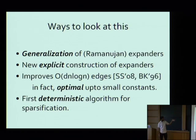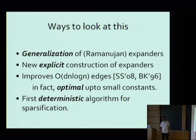Ways to look at what's new: you can see this as a generalization of expander graphs, which are approximations of the complete graph. Because the algorithm is deterministic, it gives an explicit construction of expander graphs. It improves previous work with Dan Spielman from 2008 and Benzer-Karger from 1996, which showed how to construct cut sparsifiers and spectral sparsifiers with DN log N edges — so you can see this as removing the log N. It's also the first deterministic algorithm of any kind for sparsification of any kind.